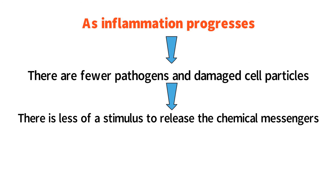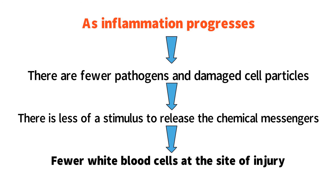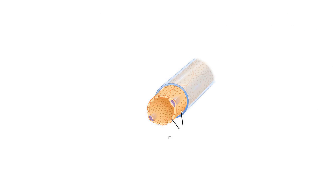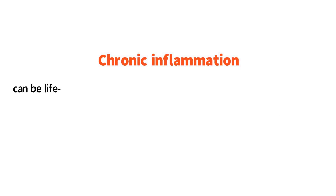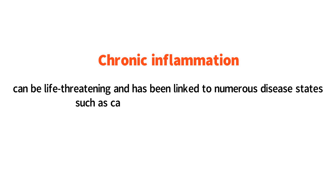A decreased secretion of chemotactic molecules results in fewer white blood cells at the site of injury. Endothelial cells begin to close their fenestra, and eventually there is no more signaling and inflammation has come to an end. It is important to note that this is only the case when inflammation is successful. Chronic inflammation can be life-threatening and has been linked to numerous disease states such as cancer and cardiovascular disease.